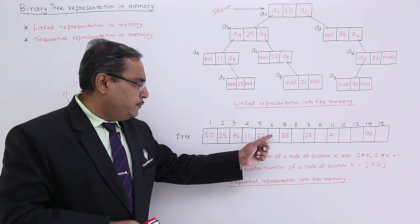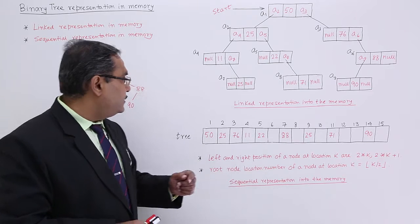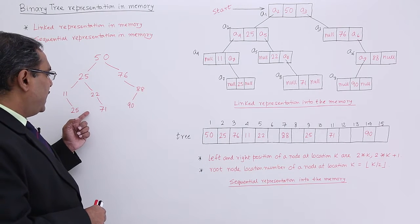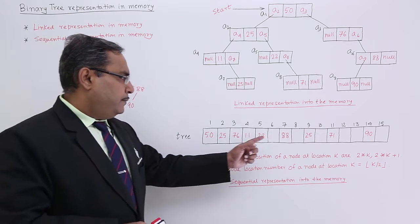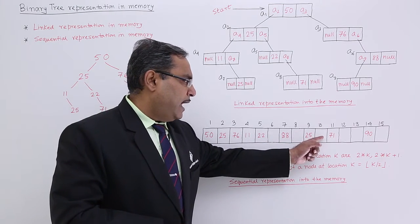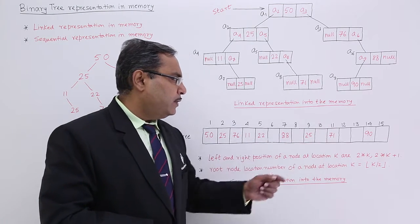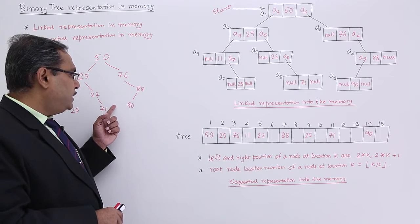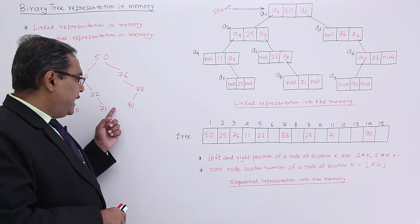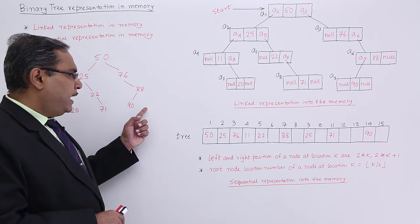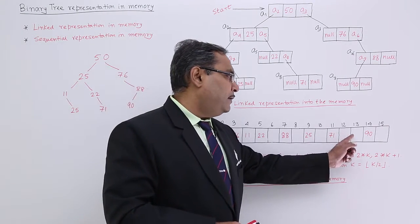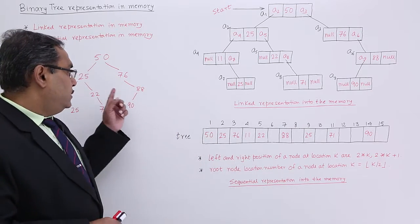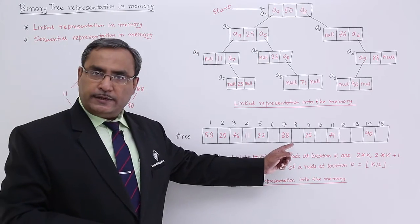Continuing the array: 11, 22, no child, 88. Then we are having blank, 25, blank, 71. If a node was there, it would have some left child and right child, so blank, blank, 90, blank. In this way, this particular tree has got represented in the array.